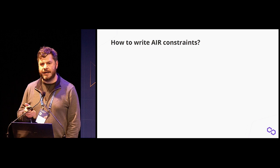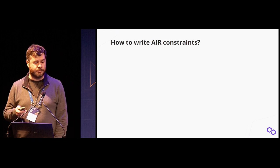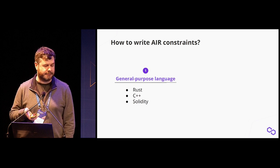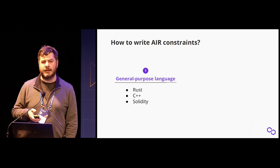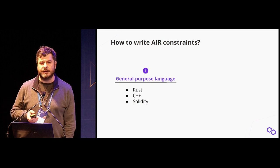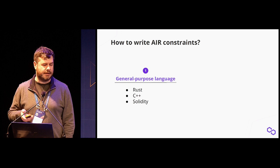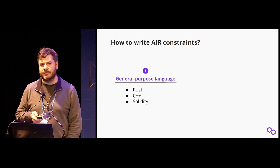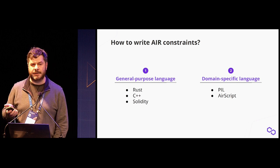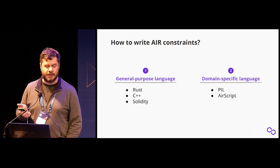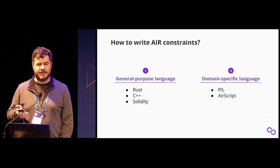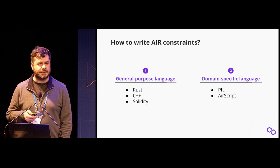So how do we write AIR constraints? There are different ways. The most straightforward is using a general-purpose programming language like Rust, C, or Solidity. In that case, you take your two-dimensional matrix—the execution trace—as input and write the mathematical equations to describe them. The other approach is domain-specific languages; for example, PIL or AirScript specifically, which is the DSL that helps you describe these constraints.